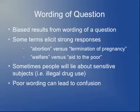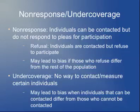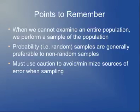Non-response and under-coverage — people who can't be contacted or who refuse to participate — are also non-sampling errors. Basically, when you do sampling: if you can't examine an entire population, take a sample; random samples are the best; and avoid or minimize these various sources of error when sampling. One last plug for the course survey and doodle poll — I'm hoping to find a time for the discussion section by the end of the week or early next week.